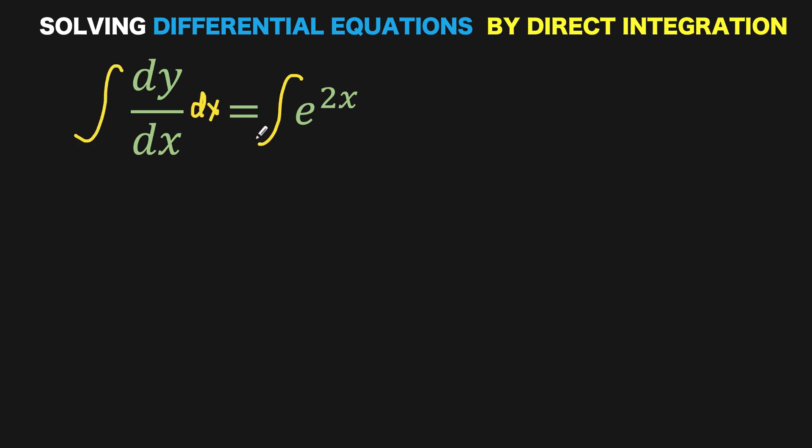So we have the integral of e raised to 2x dx. Integration and finding the derivative of a function are inverse operations, so the left side will result in the function y. And the right side is the anti-derivative of e raised to 2x dx.